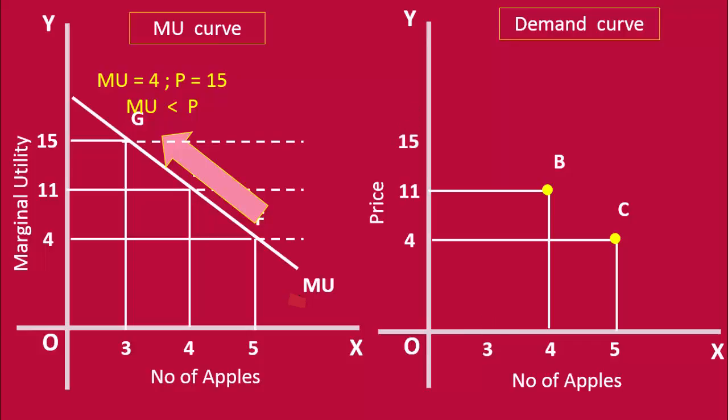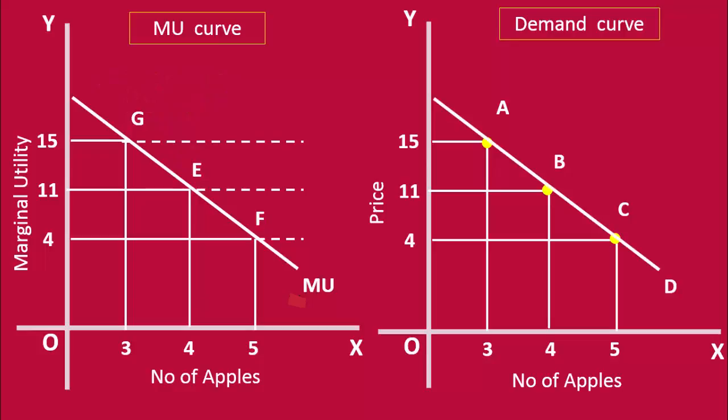At 15 rupees, the consumer buys 3 apples. This is also a point on the demand curve. We shall have it as point A. Join all the three points. This is the demand curve.